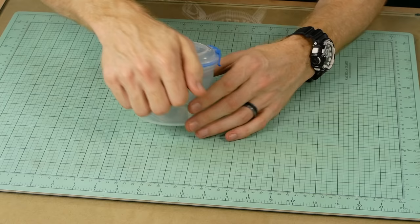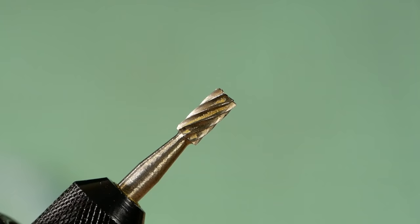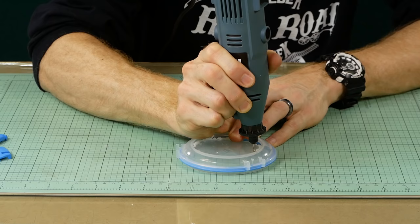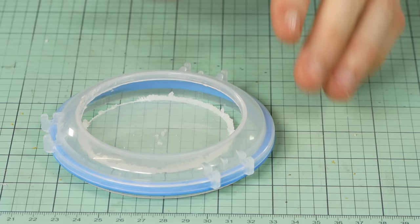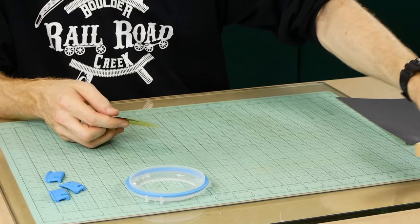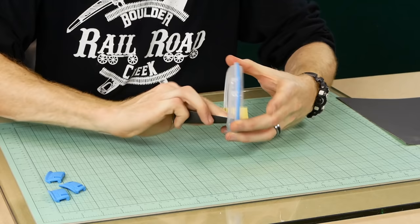We'll start with the lid. Simply remove the inner portion of the lid. A Dremel will make this job fast and easy. The inner section of the lid will be used later, so we'll just place this to one side. The Dremel will sometimes leave a rough edge, so I lightly sand the edges, although this is not always necessary.